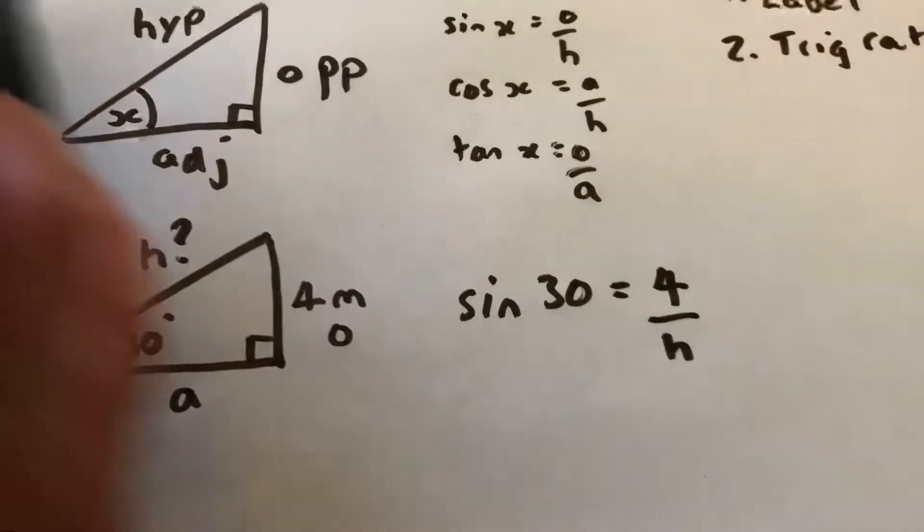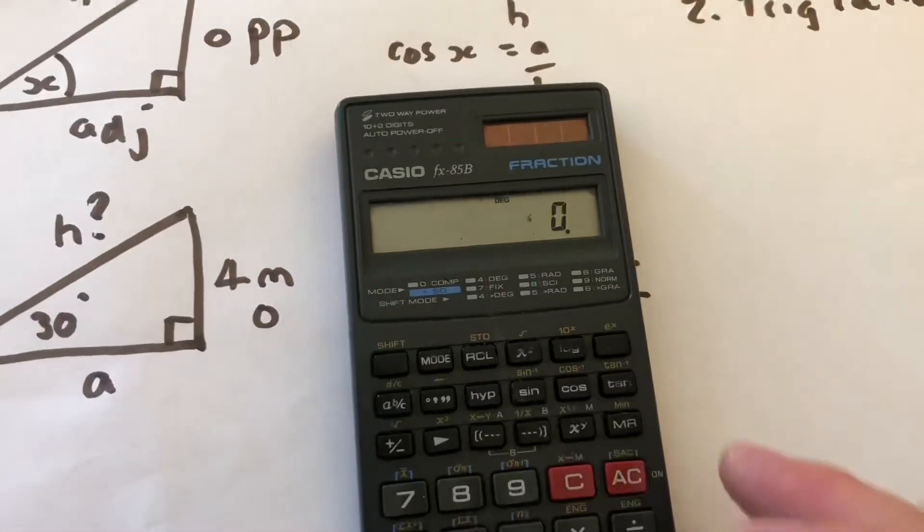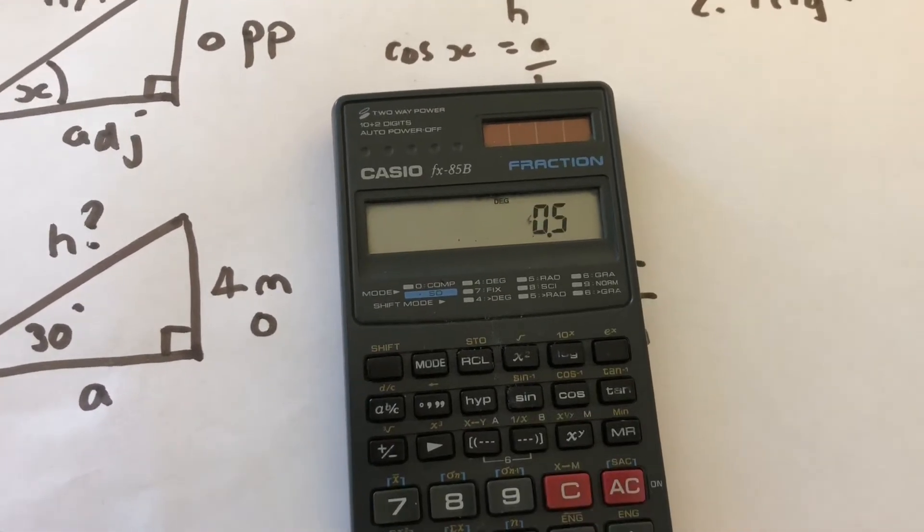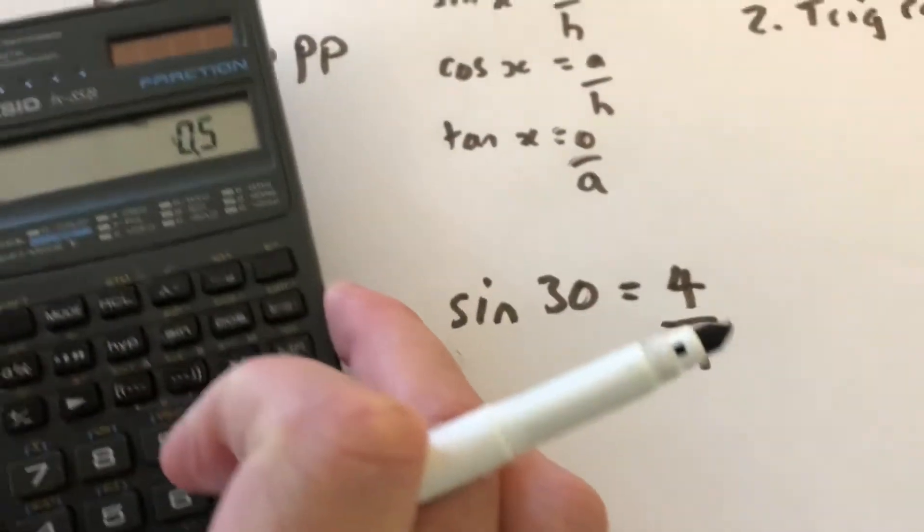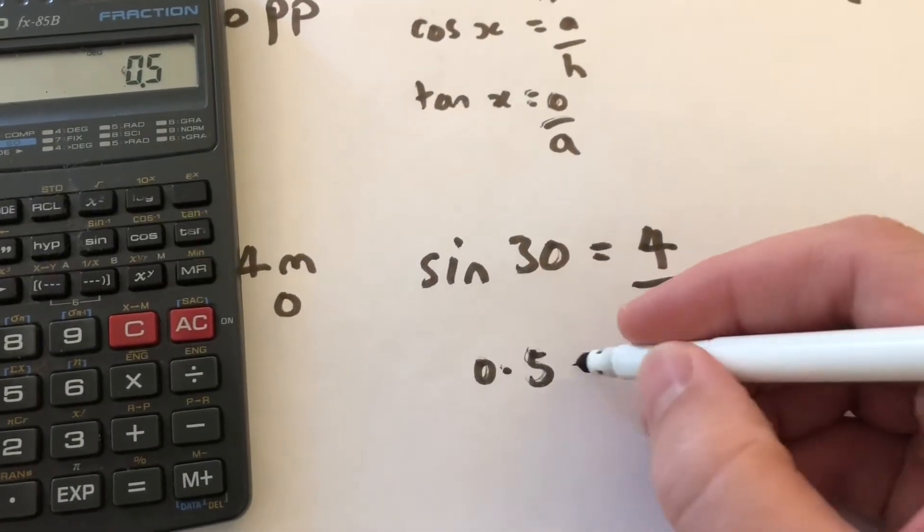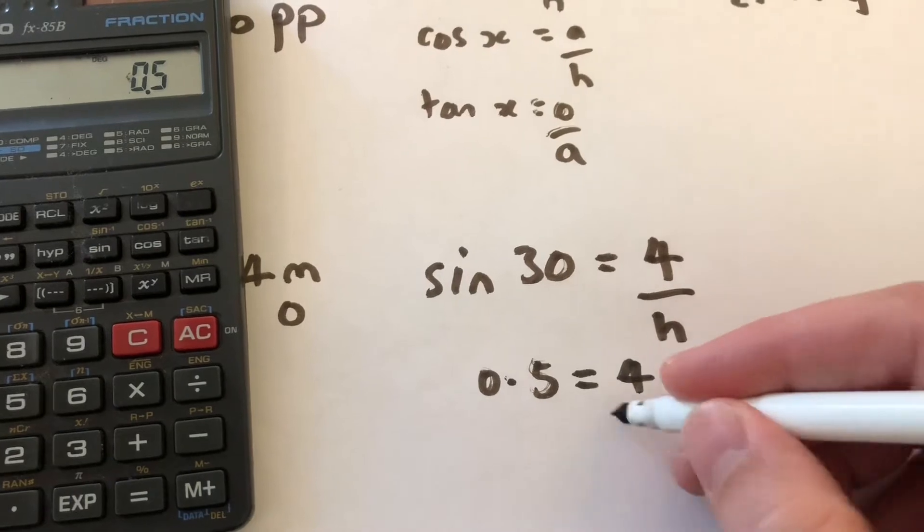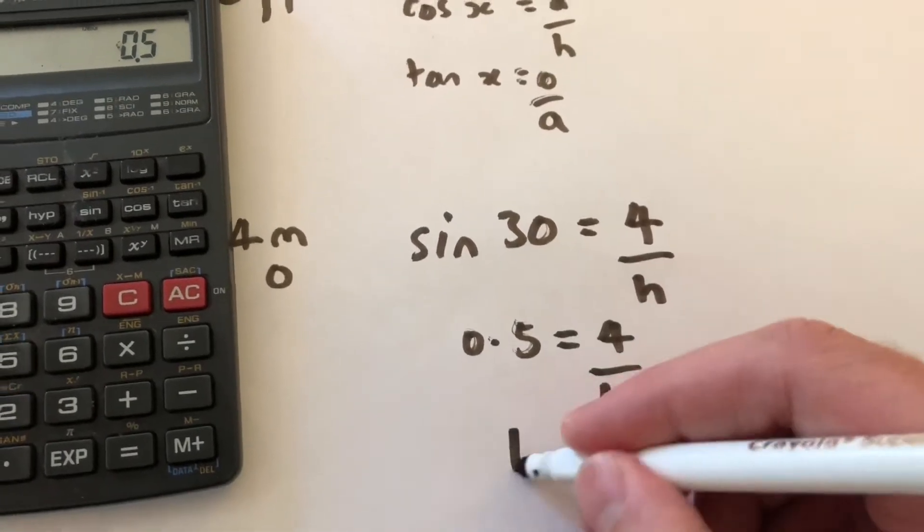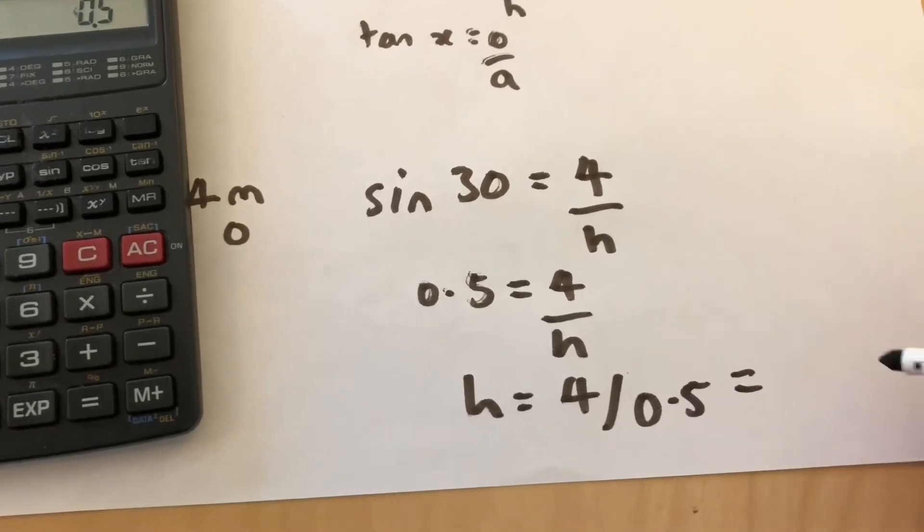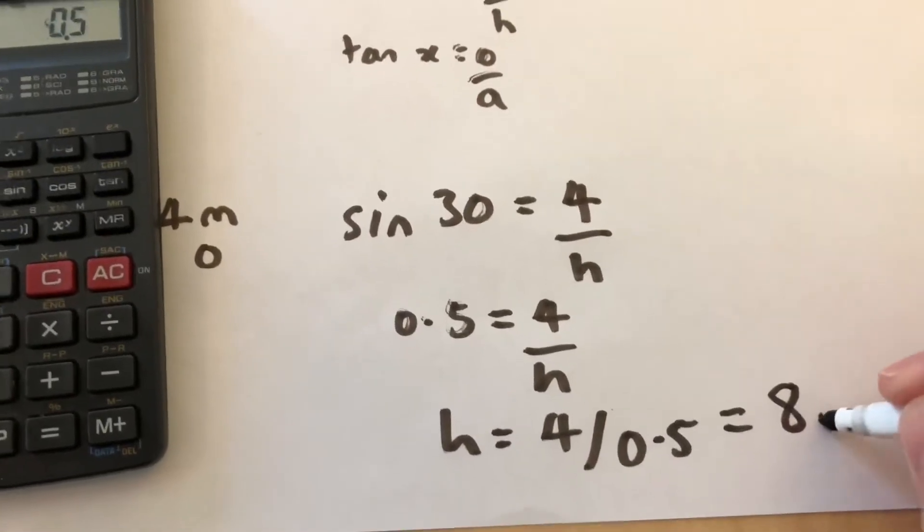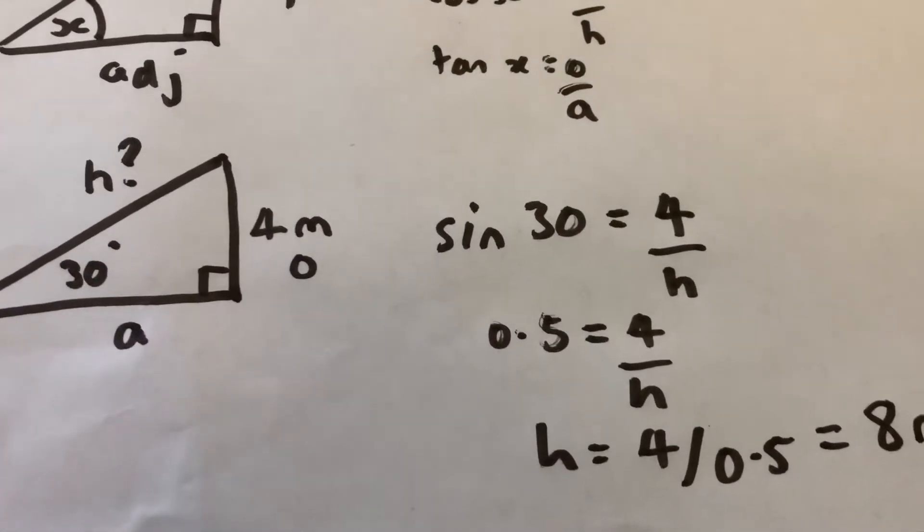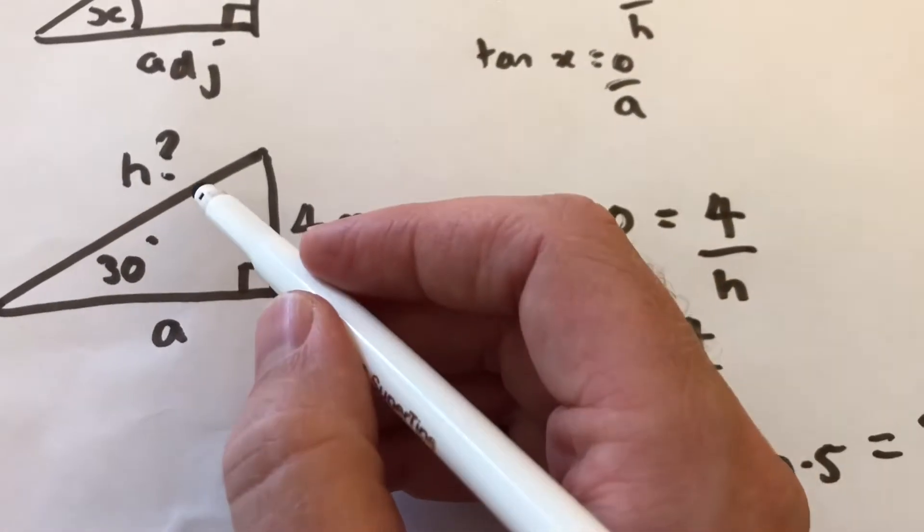Now we should be able to find what sine 30 is. I've got a very old calculator here and I have to do reverse order. So 0.5 is sine of 30. I've got an equation which I can now rearrange: 4 over H, bring the H up, 4 divided by 0.5. So that hypotenuse will be 8 meters, which makes sense. It's longer than the 4. That's finding the side.